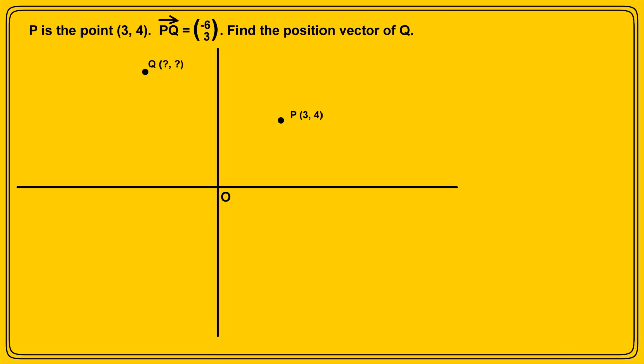Here are the points P and Q, although at this moment we don't know the exact position of point Q. But we want the position vector of Q, so that must be the vector OQ. The vector OP must be 3 over 4. And we can see that vector OQ is equal to vector OP plus vector PQ, i.e. vector OQ equals 3 over 4 plus minus 6 over 3, and this equals minus 3 over 7. So the position vector of Q is minus 3 over 7.